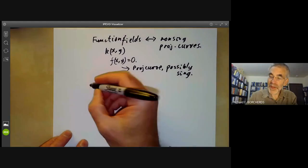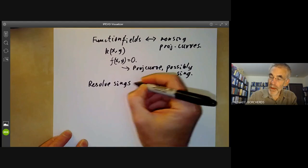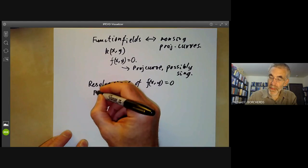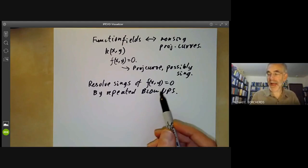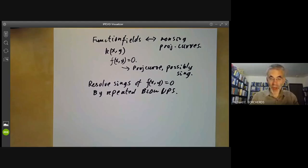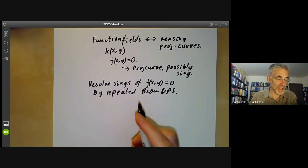We're going to show we can resolve singularities of the curve f(x,y) = 0 by repeated blow-ups. The algorithm is very simple: whenever there's a singularity of the curve, we blow up at that point and just keep doing that. We'll show that this eventually produces a non-singular curve. We're going to assume the characteristic is equal to zero.